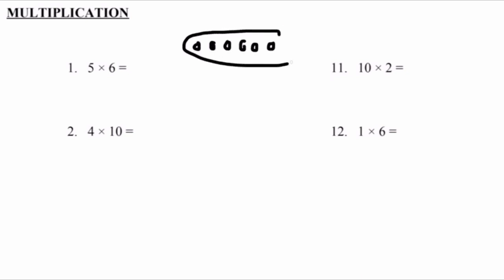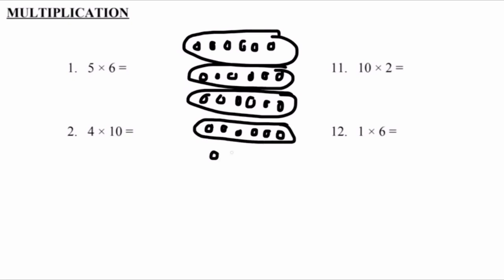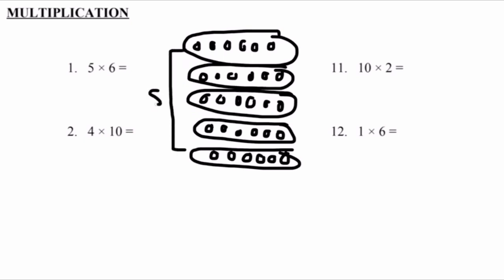We draw our first group of 6 circles, then our second group of 6 circles, then our third group, fourth group, and our fifth group. We now have 5 groups of 6 circles.